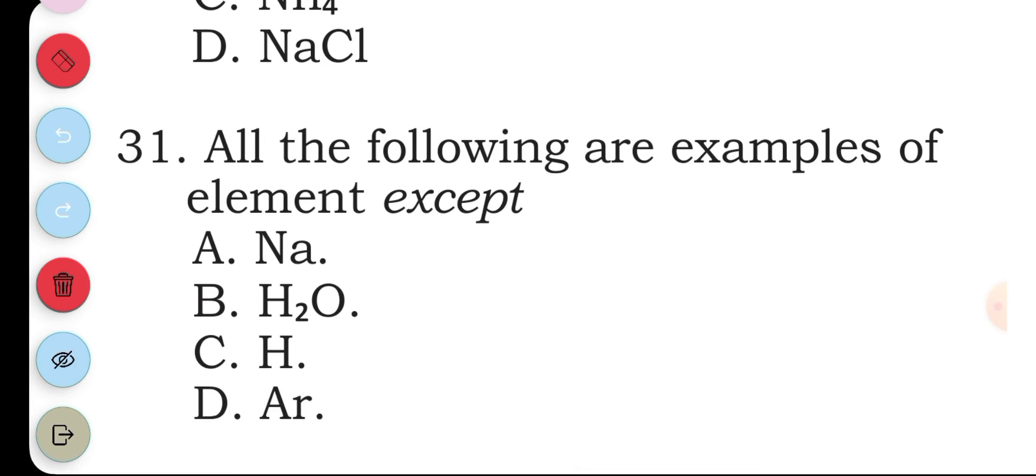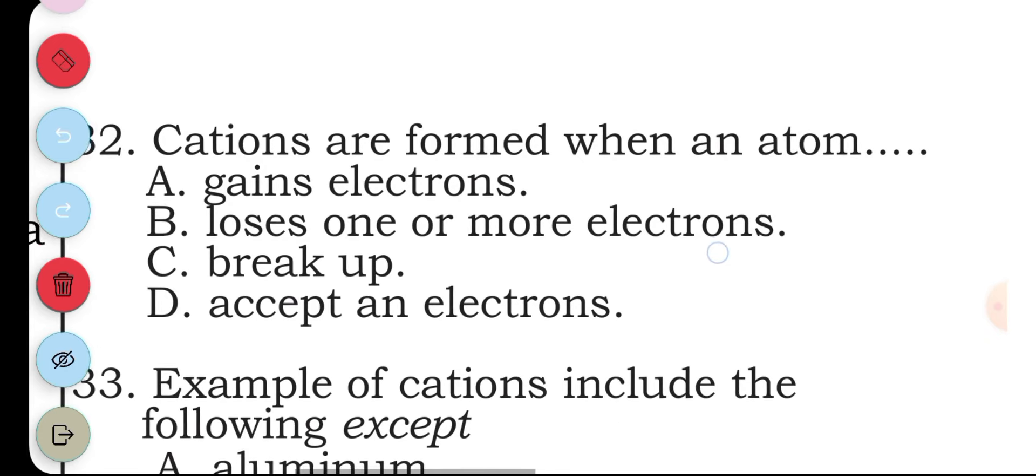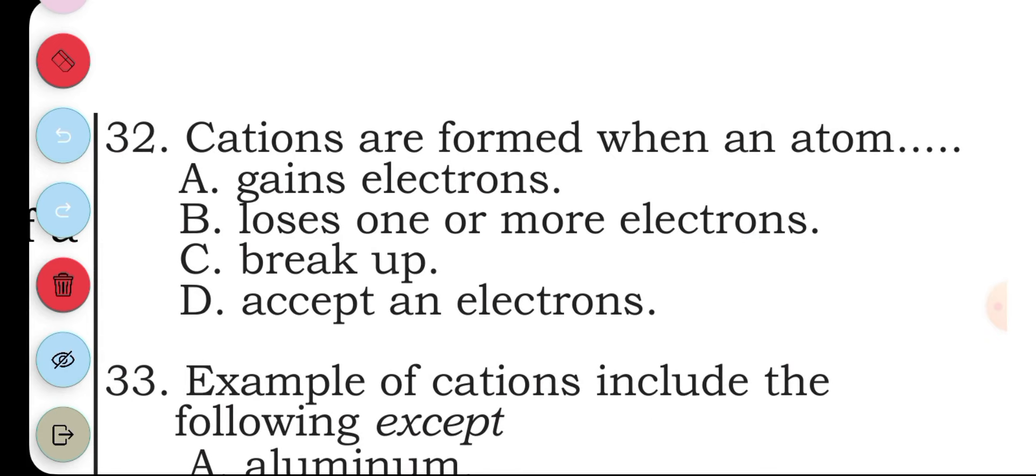Question thirty-one: all the following are examples of elements except: A sodium, B water, C hydrogen, D argon. The answer to question thirty-one is B, water. Question thirty-two: cations are formed when an atom: A gains electrons, B loses one or more electrons, C breaks up, D accepts an electron. The answer to question thirty-two is B, loses one or more electrons.